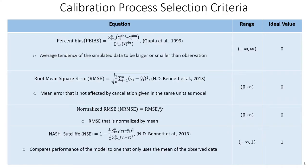The calibration process selection criteria consisted of the calculation of percent bias, root mean squared error, normalized root mean squared error, and Nash-Sutcliffe values. These values were calculated based on the equations shown and were used to select the best calibrated model.